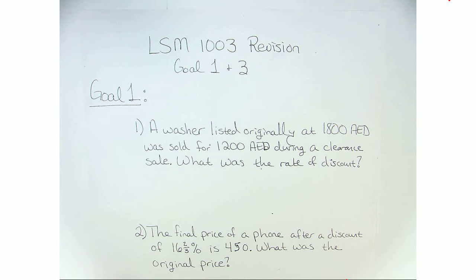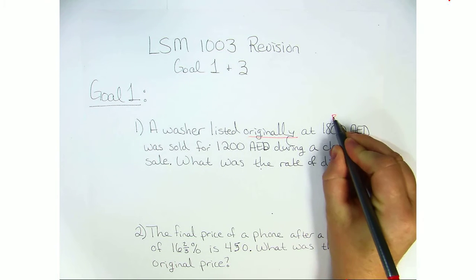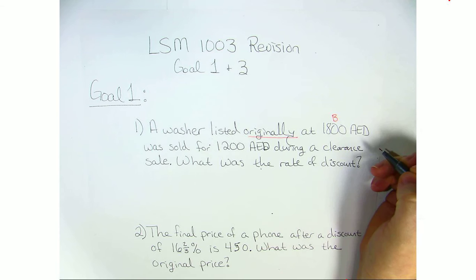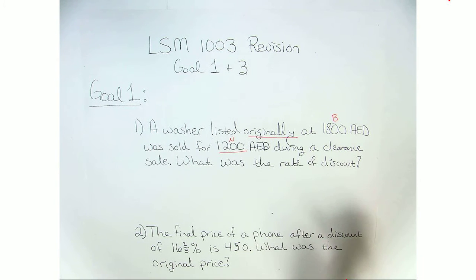Number 1: A washer listed originally at 1,800 dirhams was sold for 1,200 dirhams during a clearance sale. What was the rate of discount? So we've got originally, meaning this is our B, our base amount, and it was sold for 1,200 so this is the new amount and we're looking for the rate.